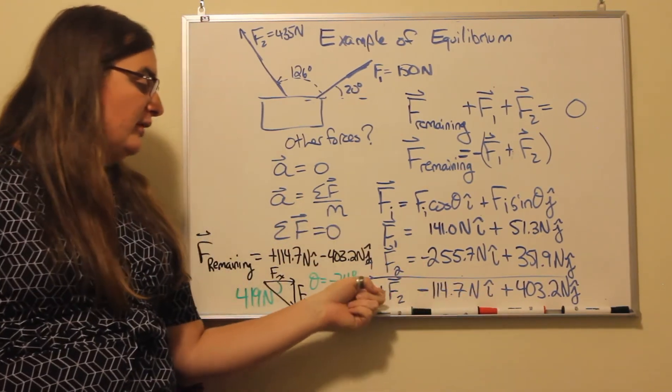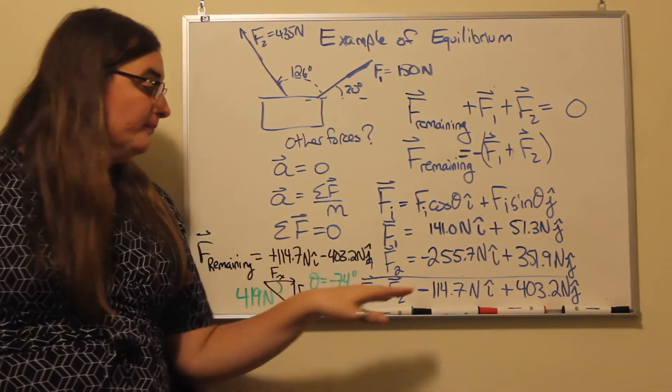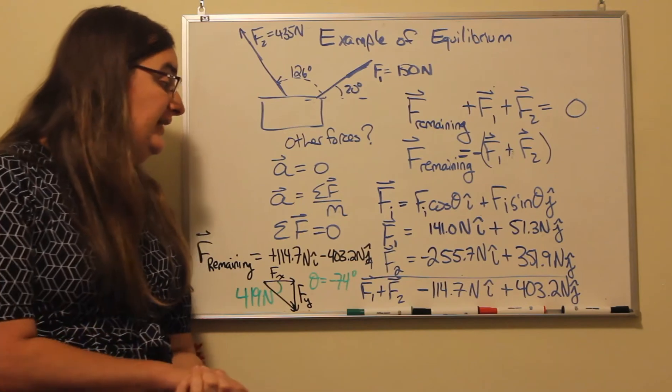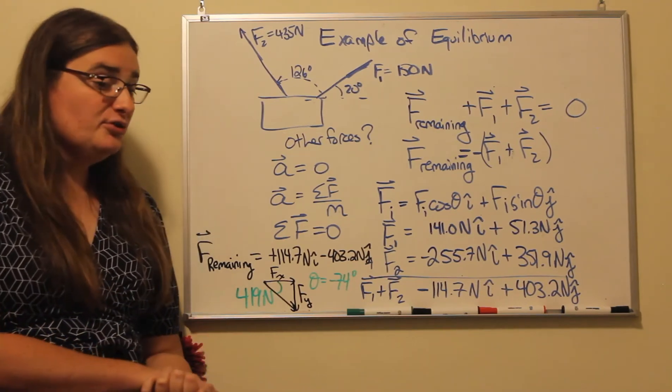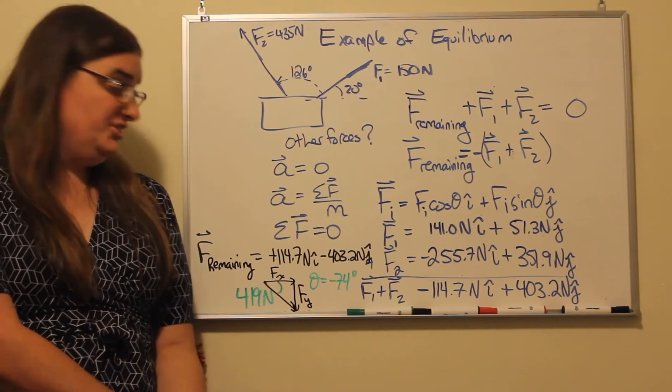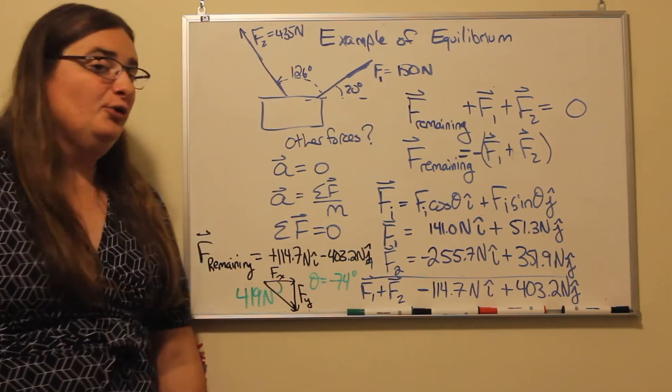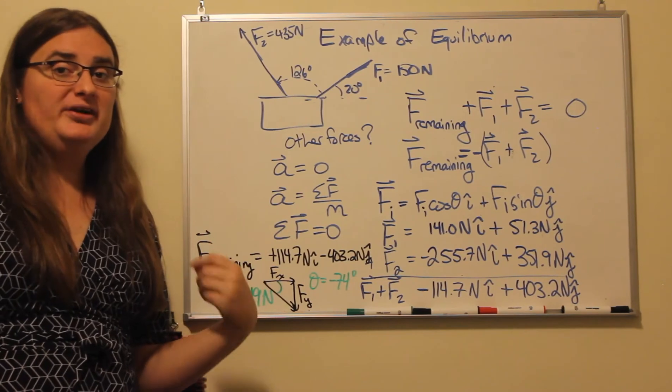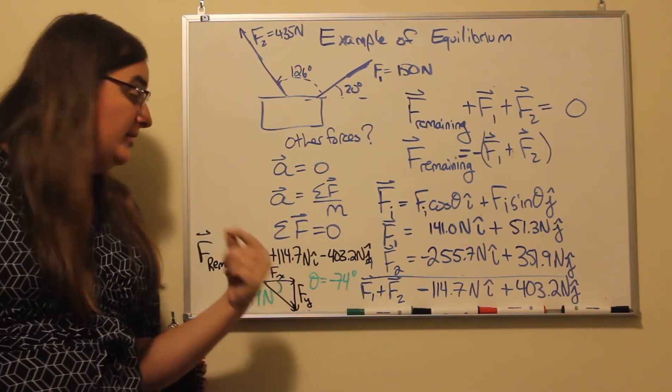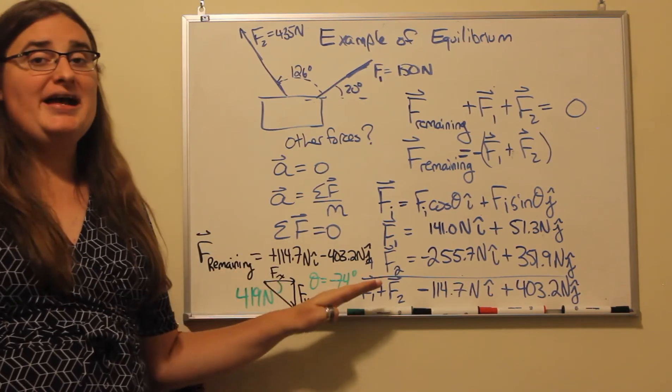So if F1 plus F2 is negative 114 newtons in the i hat direction plus 403.2 newtons in the j hat direction, then my remaining force would have to be plus 114.7 newtons i hat minus 403.2 newtons j hat.